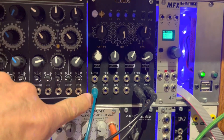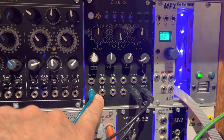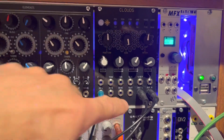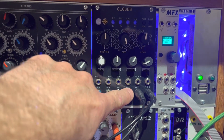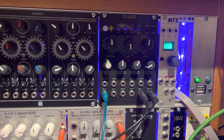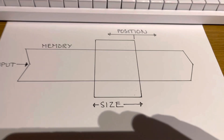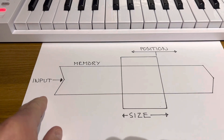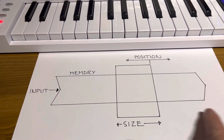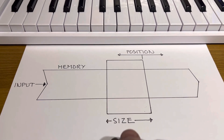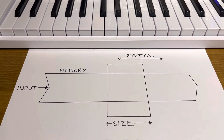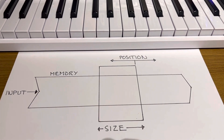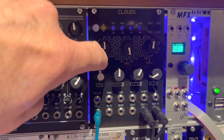It takes sound in from two inputs — left and right inputs. It flows through memory in real time, and you can select what part of that sound and at what pitch to send to the outputs. Here's a little diagram: the sound source comes in, flows through the memory, and you can select the size of the slice and the position along that timeline. That's controlled by the position and size knobs.